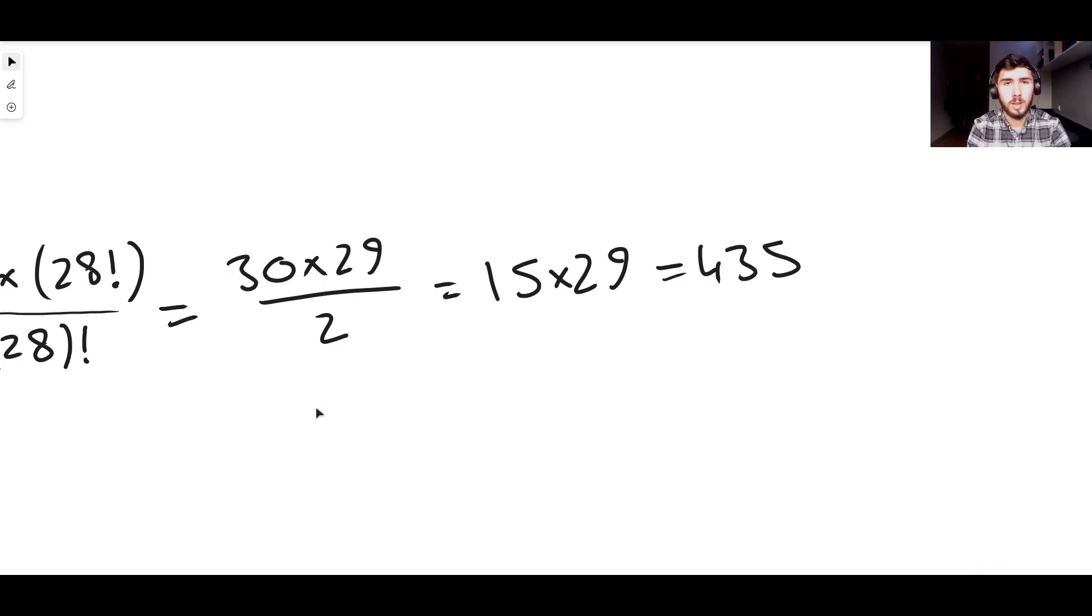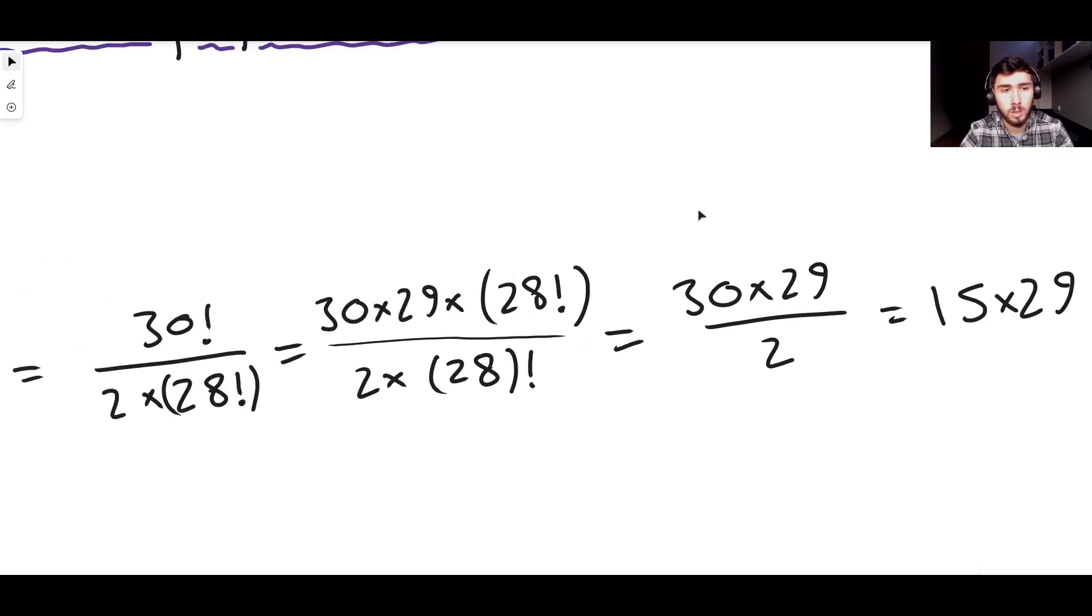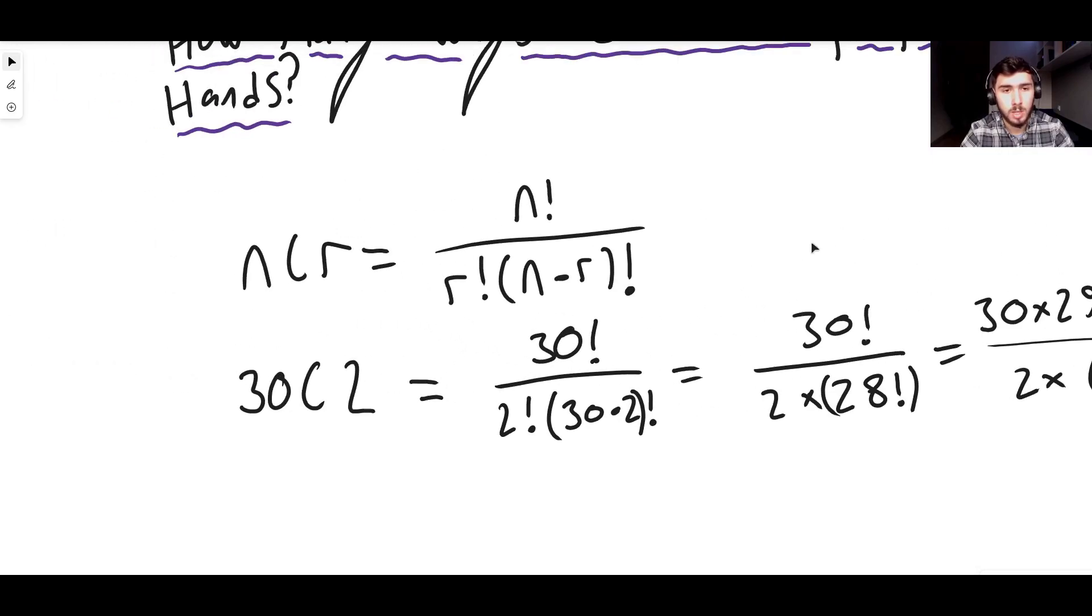If you have a calculator like this one, maybe you do maybe you don't, it's the Casio FX 911EX. There's other calculators that do this but this is one that I know that definitely does it. There is a button actually on here that will do choose for you. So you can just type in 30 and then choose 2 and it gives you 435. But if you don't have that button on your calculator you can do this method and you can use this formula here.